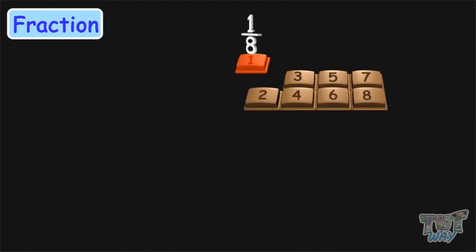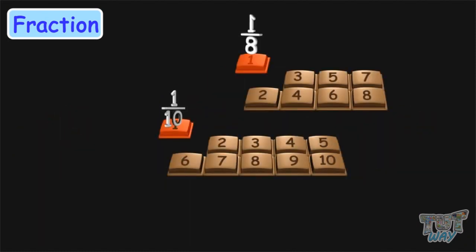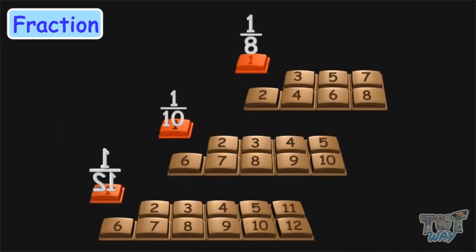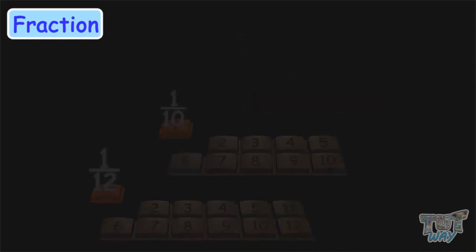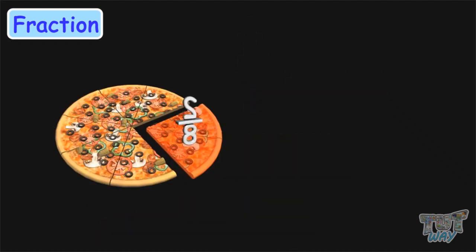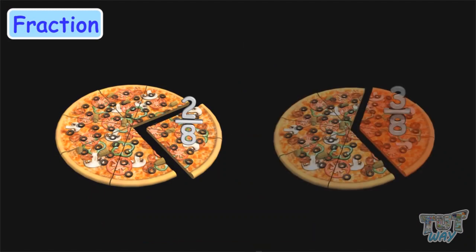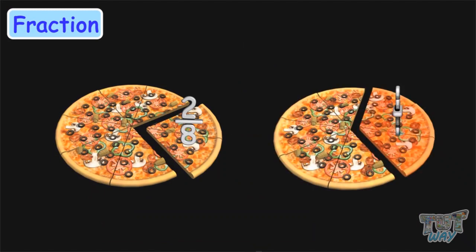Similarly, one by eight, one by ten, one by twelve. Two by eight means two parts out of eight equal parts. Three by eight means three parts out of eight equal parts.